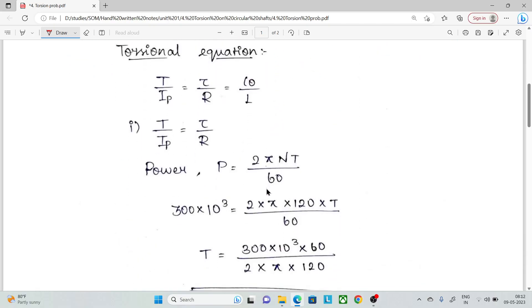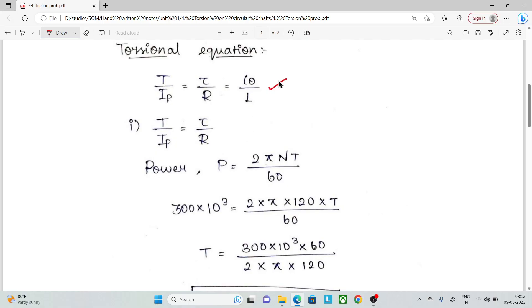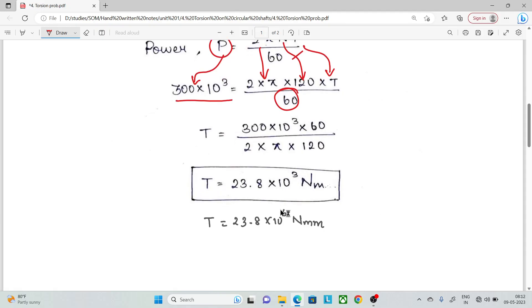We can get the total torque value using the formula: P = 2πNT/60. Power is 300 × 10³, 2π, N is 120, and we divide by 60. So we can solve this: torque T = 23.8 × 10³ Newton meter.